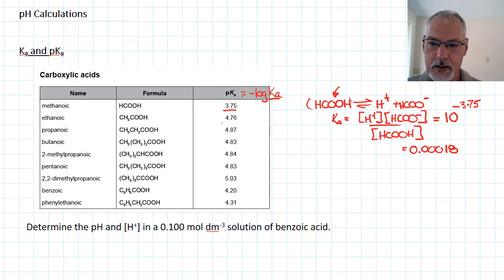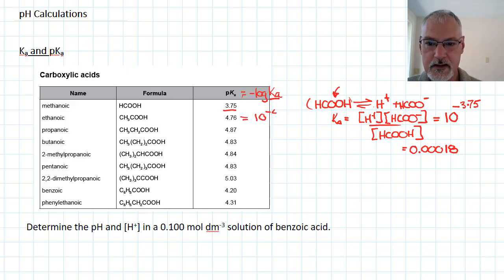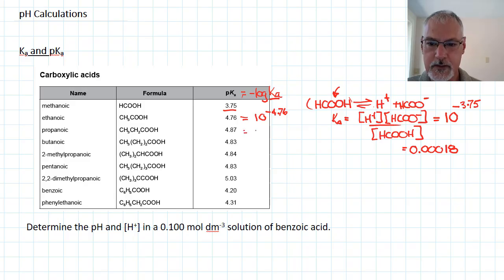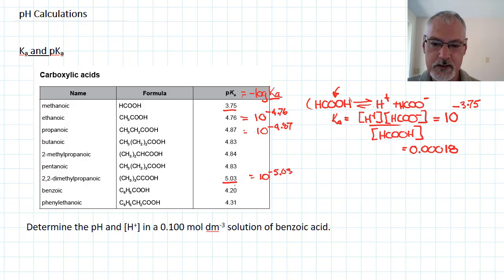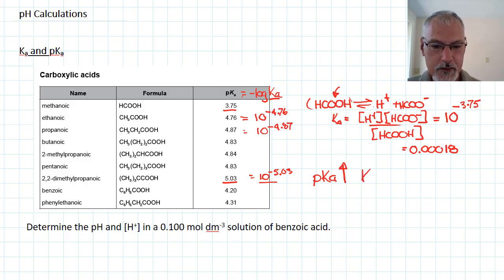It turns out that the bigger the pKa value, the smaller the equilibrium constant. For instance, the equilibrium constant for this reaction would be 10 to the negative 4.76, for this one 10 to the negative 4.87, and moving further down, 10 to the negative 5.03. So you can see the larger the pKa value becomes, the smaller the equilibrium constant. As pKa goes up in value, the equilibrium constant for the reaction actually becomes smaller. So the larger the pKa, the weaker your acid is.